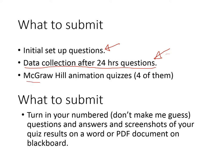Finally, you've got four quizzes similar to one you did earlier. You go to the McGraw-Hill website and submit those quizzes. You need to submit them each with a minimum score of 80%. Please turn in your numbered questions — number the questions and the answers — and screenshots of your quiz results on a Word or PDF document on Blackboard.